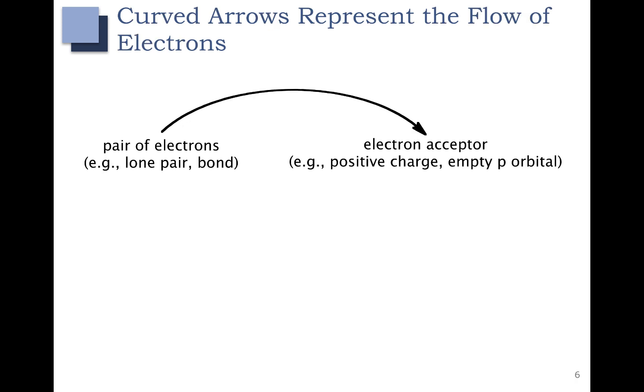Recall that when we talked about resonance, we talked about using curved arrows to represent the flow of electrons. Remember that we moved a pair of electrons using an arrow, and we went to something that could accept those electrons. In a lot of cases, it was a positive charge or an empty orbital. And remember that the direction of our arrow was important because we are moving the electrons, not the charge.